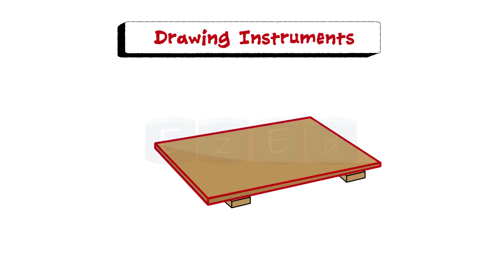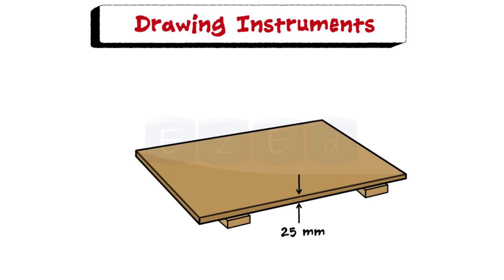Drawing board is rectangular in shape and is made of wood about 25mm thick. It is cleated at the back by two battens to prevent warping. The surface of the board should be smooth and it is used to keep the drawing paper. There is a working edge at the side of the drawing board.